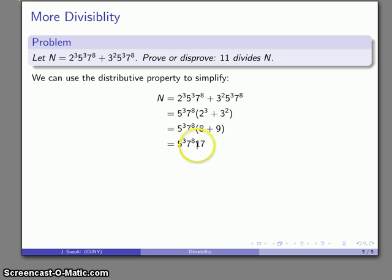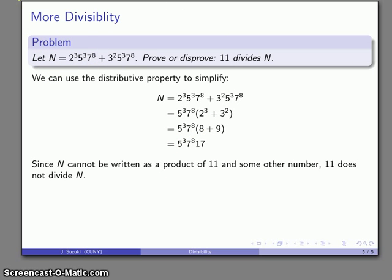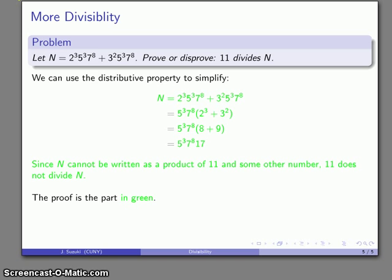Now, 11 is prime, and there is no way that I can get an 11 out of this. So 11 is not in the recipe for N. Therefore, 11 does not divide N, and again, the essential part of the proof is the portion in green.